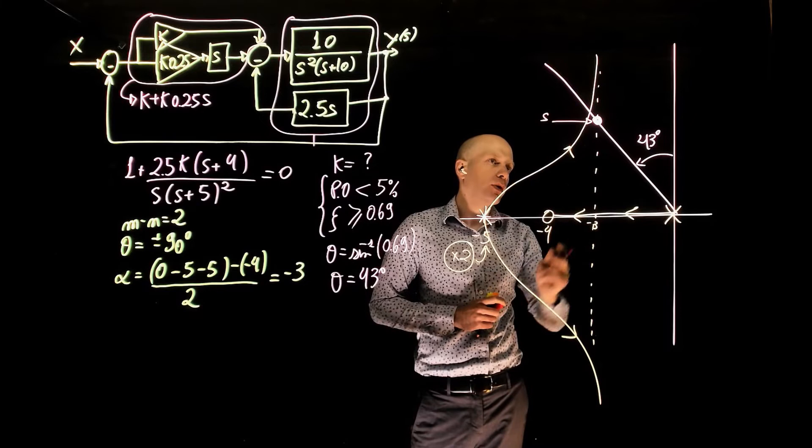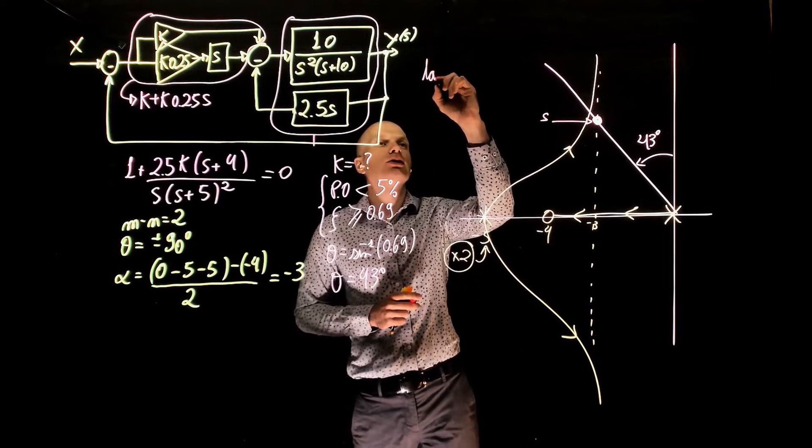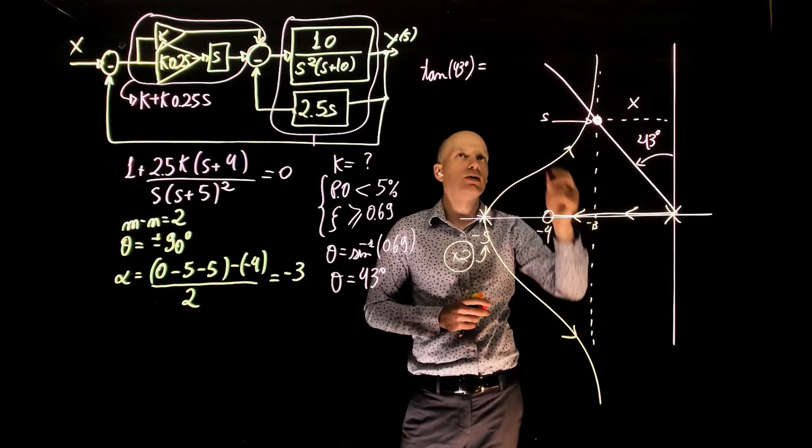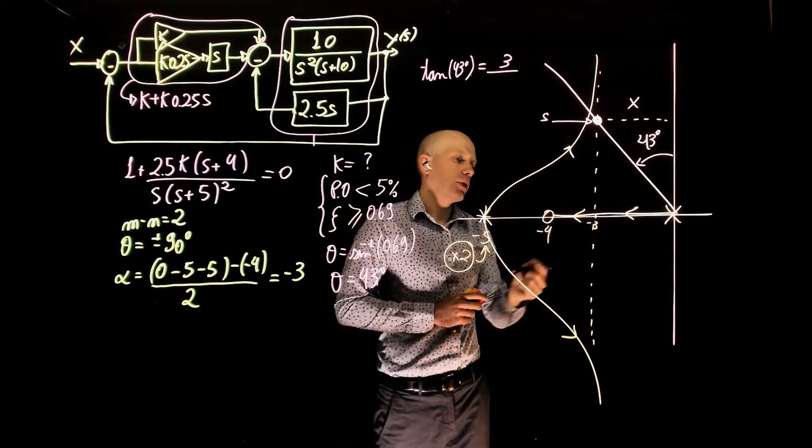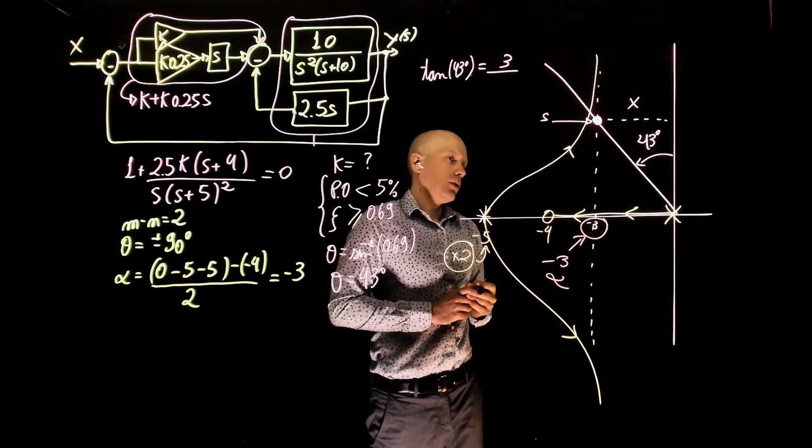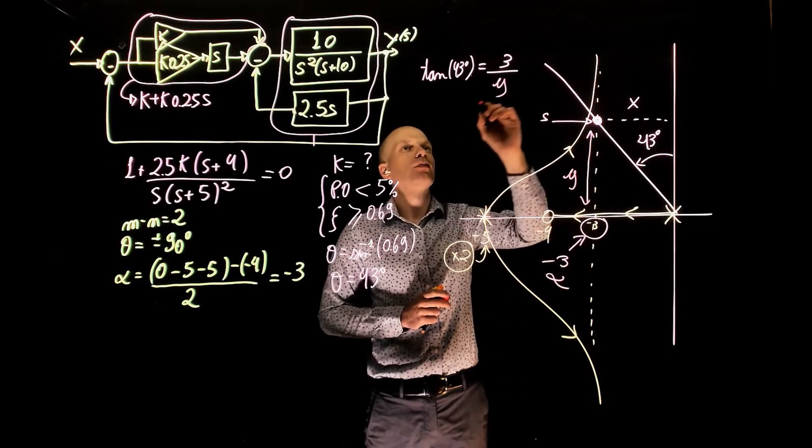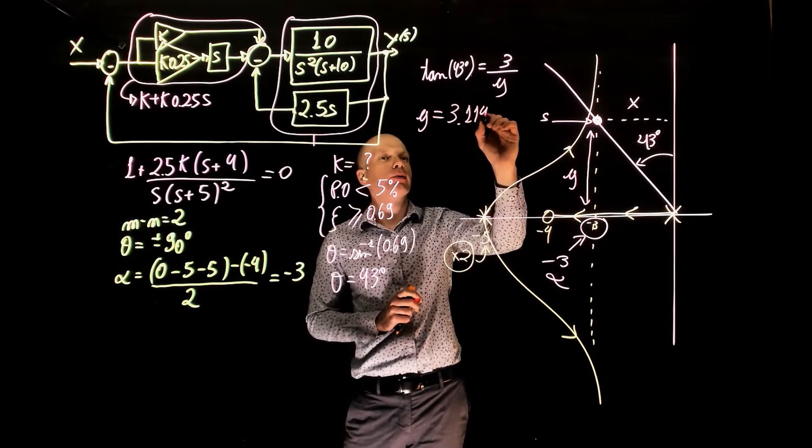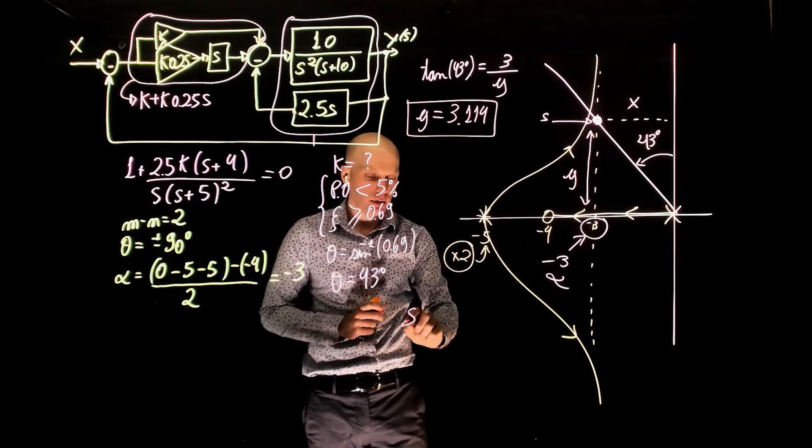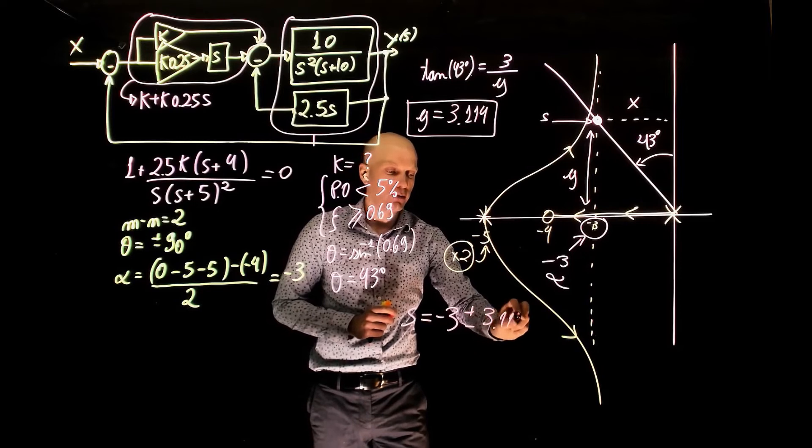The value of s is here. What is that value of s? We have an angle of 43 degrees. So we can write now that the tangent of 43 degrees equals this distance here. Let's call that x, which is 3. Now, the centroid of the asymptote here is at negative 3, which is alpha, divided by this height here that I'm going to call y. And now solving for y gives 3.114. This is this height. Now the coordinate of the pole is simple, is negative 3, this distance, plus minus 3.114j.